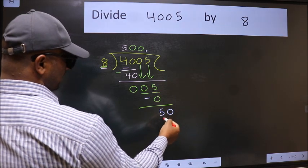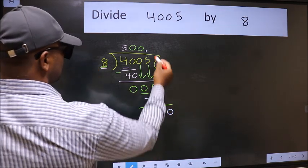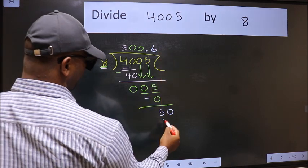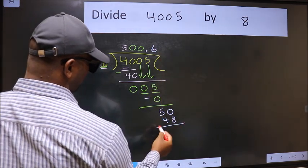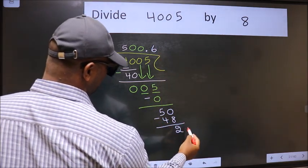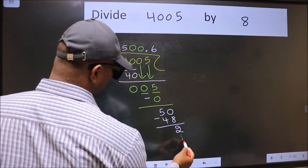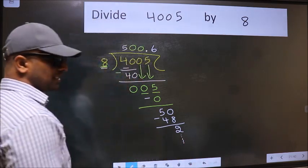So 50. A number close to 50 in 8 table is 8, 6, 48. Now we should subtract. We get 2. And you continue the division. I am not doing that.